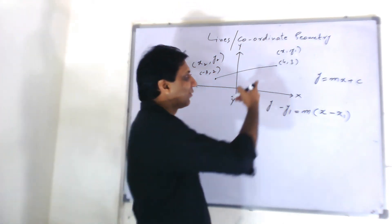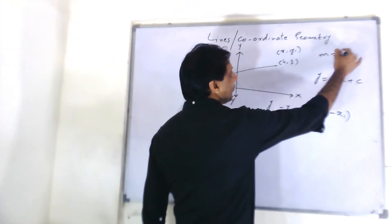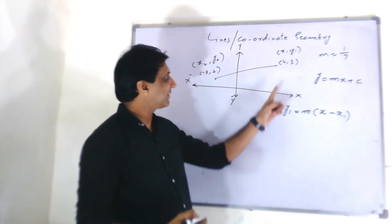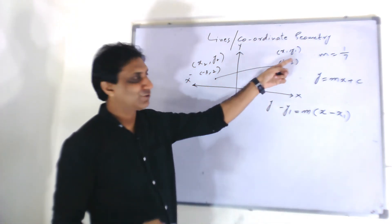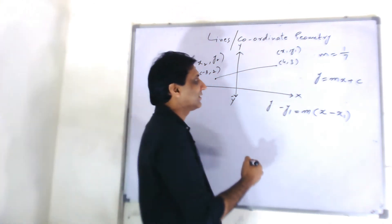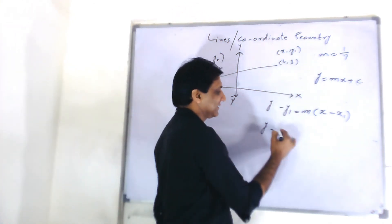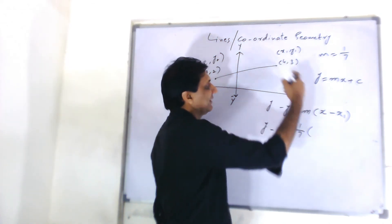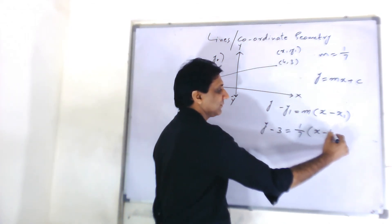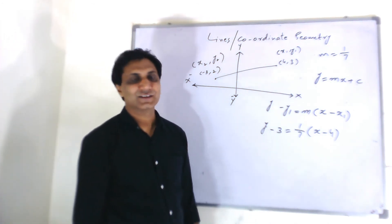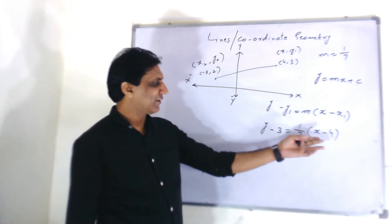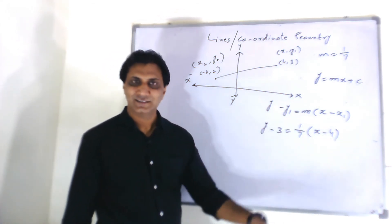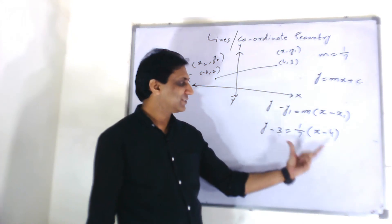As we already know, the slope of this line is 1 over 7. This is what we know. And X1, Y1 can be any of these points. So, let's take it 4, 3. So, Y minus Y1 is 3. M is 1 over 7, X minus X1 is 4. That's it. This is your equation. You can convert it into any form. Y is equal to something or X plus Y is equal to something. That's another thing. But this is your equation.